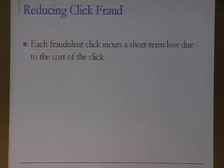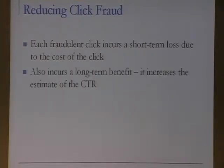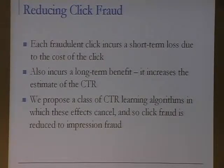In a recent paper, we tried to reduce click fraud by changing how the auction is run behind the scenes. The key observation is that each fraudulent click incurs a short-term loss — the cost of the click — but also gives a long-term benefit by increasing the search engine's estimate of the click-through rate. Since the price of future clicks is inversely proportional to the CTR, we propose a class of CTR learning algorithms where these effects cancel, thereby reducing click fraud to impression fraud — you can't cost an advertiser more than you could with impression fraud.